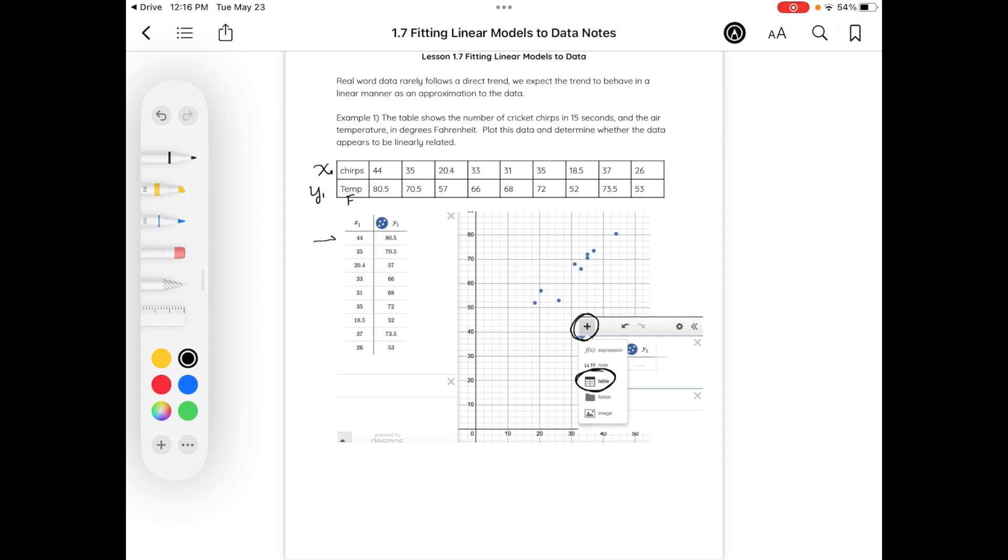So each particular point corresponds to the table. Once I started plotting those points, they started showing up in my graph. I needed to alter the screen of my graph by clicking on the wrench in my settings to alter my x and my y values so that I could really see all of the data points. I do see that it does appear that it is a positive linear trend as my x values are getting greater. So as the number of chirps is getting greater, the temperature is also increasing at the same time.